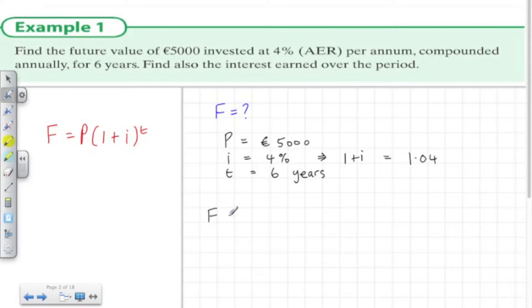So we sub this into the formula. That's five thousand multiplied by one point zero four to the power of six. Sub this into your calculator and we get six thousand three hundred and twenty six euros sixty cents, rounded off to the nearest cent.